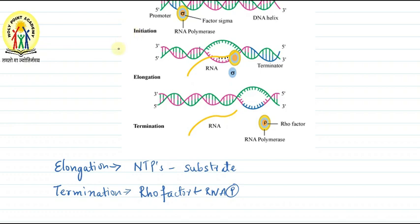And this nascent RNA, which remains attached to the RNA polymerase enzyme, falls off as soon as transcription stops. So this is all about the process of transcription. I hope you understood the explanation. Thank you.